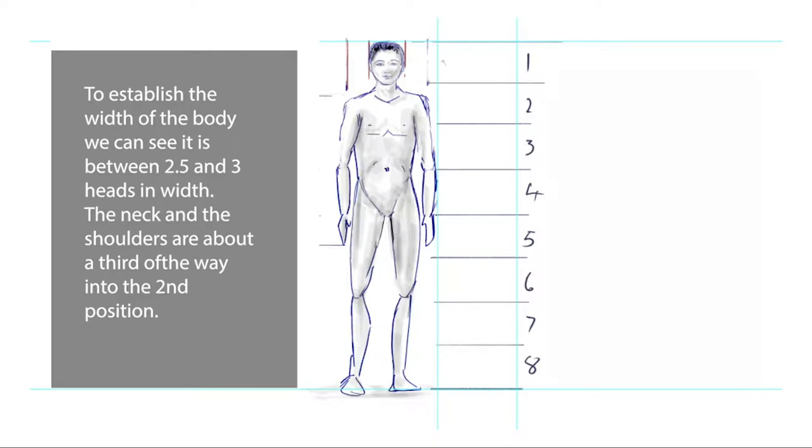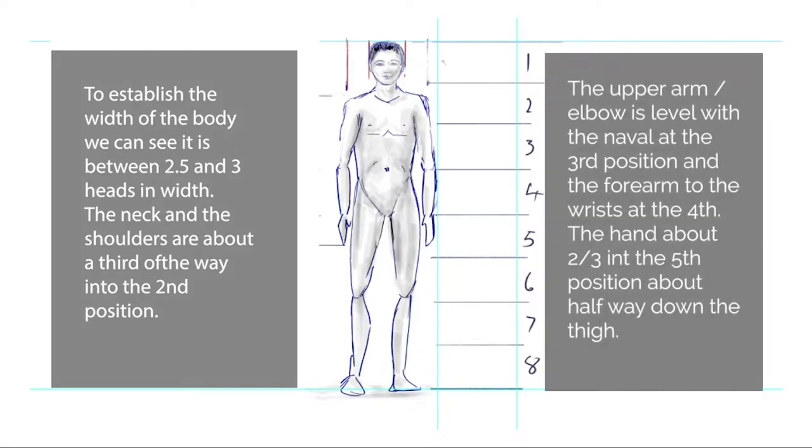The neck and shoulders are about a third of the way into the second position. The upper arm is level with the navel at the third, and the forearm to the wrists at the fourth, and the hand goes to about two thirds into the fifth position, about halfway down the thigh.